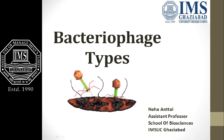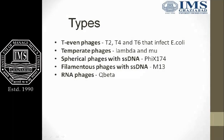Hello to all the listeners. Today we will discuss the topic of bacteriophage types. We have already discussed what a bacteriophage is and what type of life cycle is present in bacteriophage. Now we will discuss different types: T-even phages, temperate phages, spherical phages with single-stranded DNA, filamentous phages with single-stranded DNA, and RNA phages.